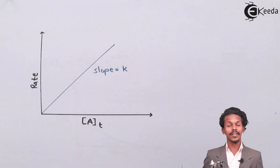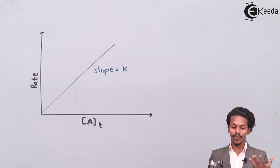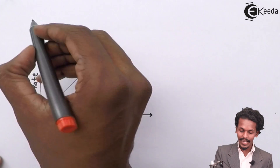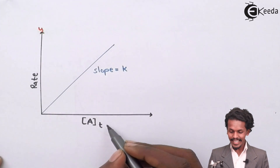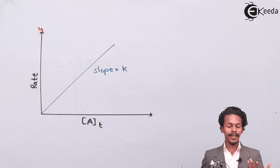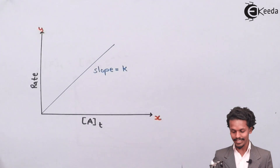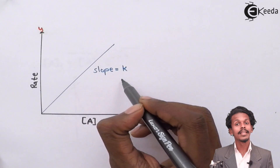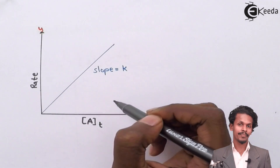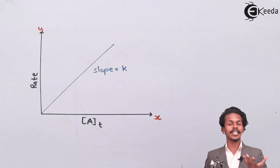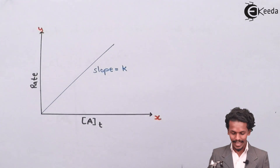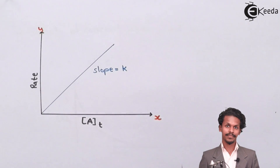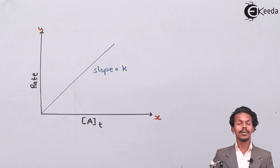This is the graph of rate versus concentration. Rate is on the y-axis, and concentration at time t, [A_T], is on the x-axis. The slope is the rate constant k. Since the intercept value c is 0, there is no intercept, and the line passes through the origin.